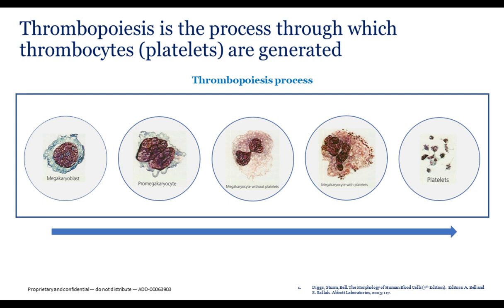Megakaryopoiesis is a unique way of maturation that does not occur in any other cell lineage. The cell multiplies nuclear material within the same cell — called endomitosis, or nuclear division without cell division. Depending on the physiological need for new platelets, endomitosis stops and platelet formation begins. Through a process of cytoplasmic fragmentation, each megakaryocyte generates between 2,000 and 5,000 platelets, which then circulate in the peripheral blood for about 5 to 10 days or become pooled in the spleen.